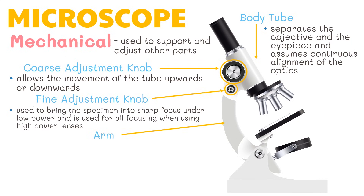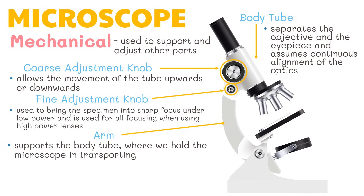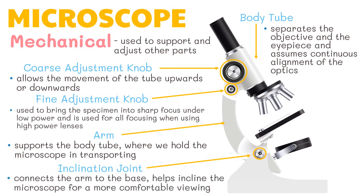The arm is the curved shaped part that supports the body tube. It is where we hold the microscope when transporting it from one place to another. Next, the inclination joint connects the arm to the base. It helps incline the microscope for a more comfortable viewing.